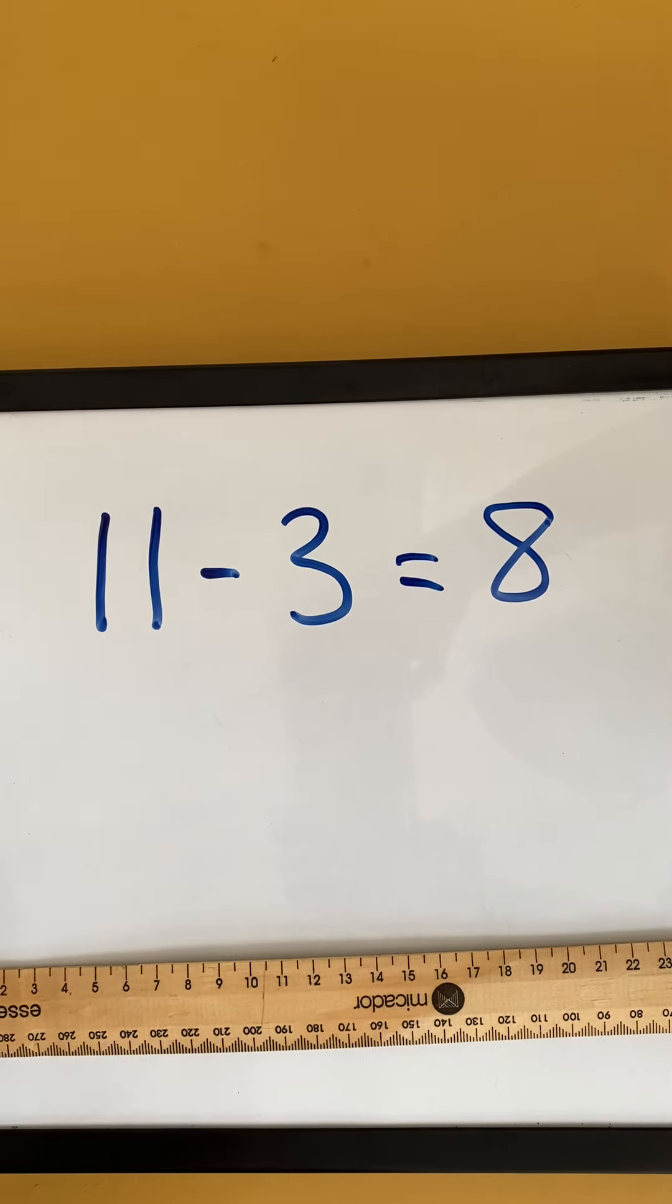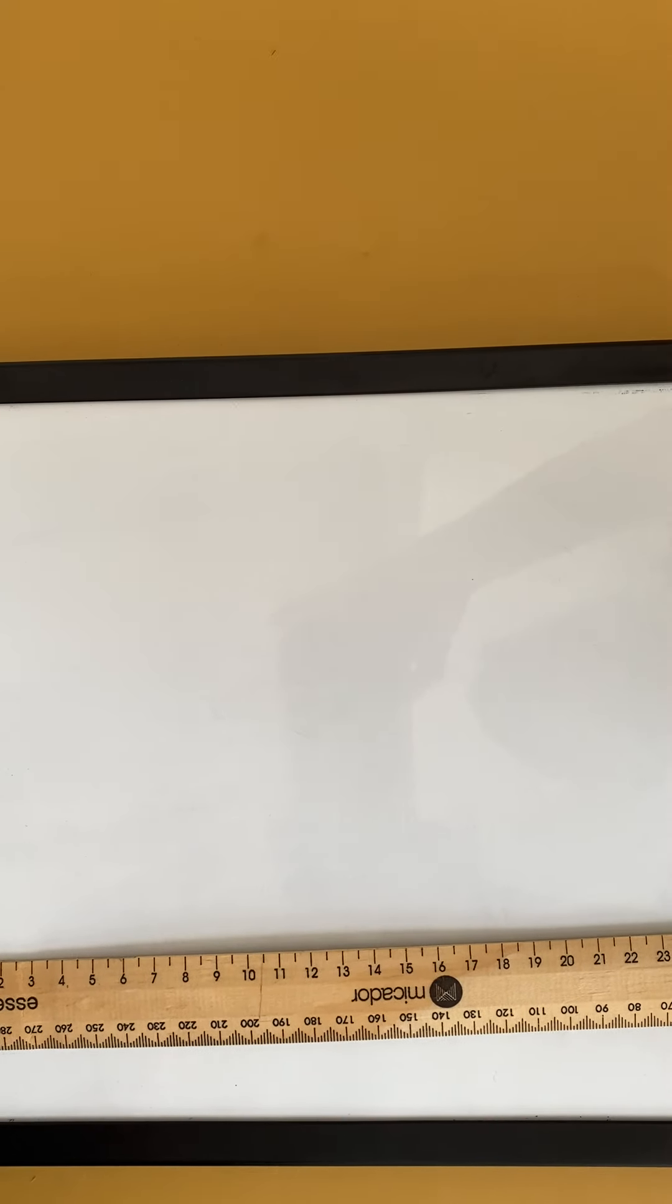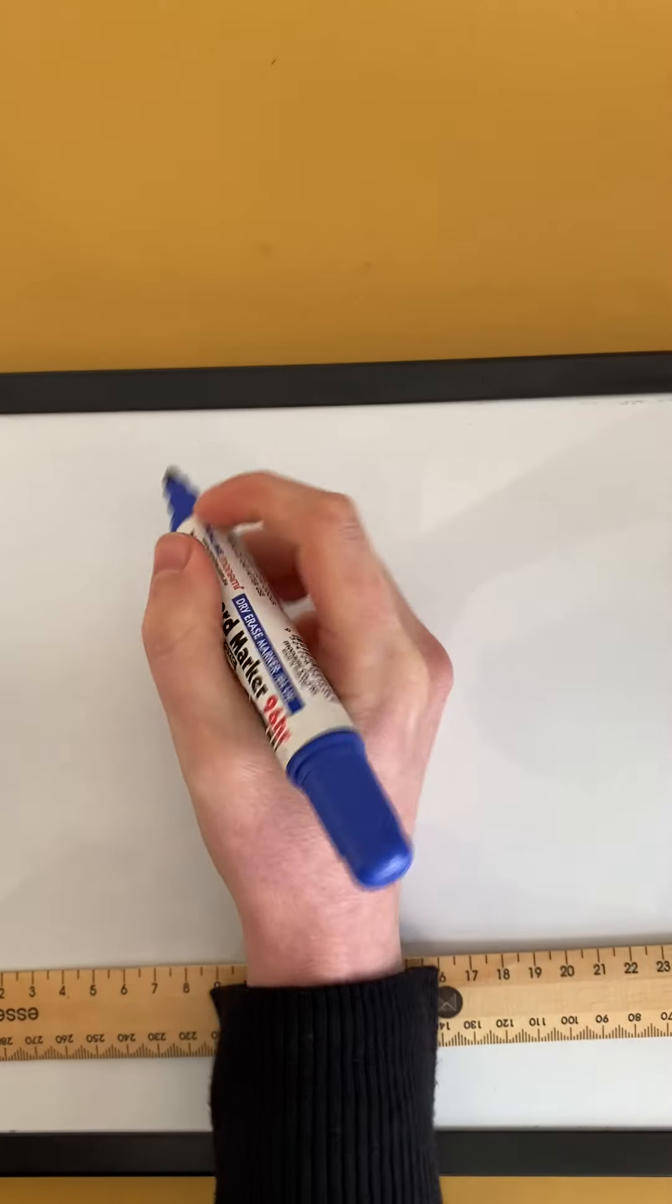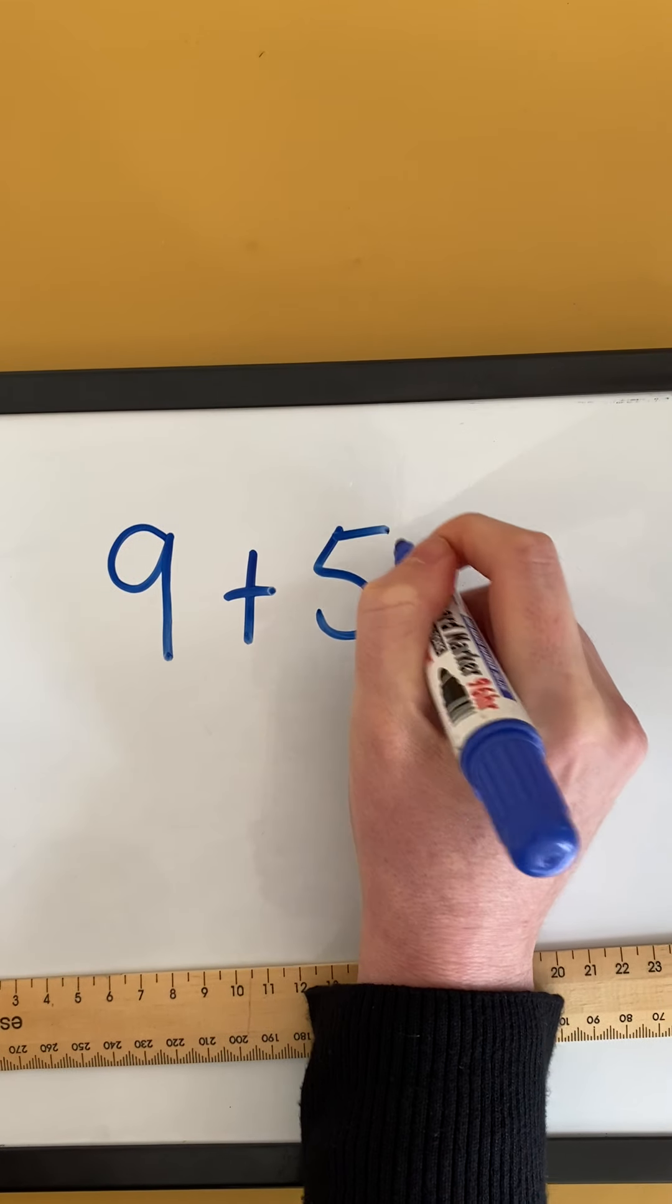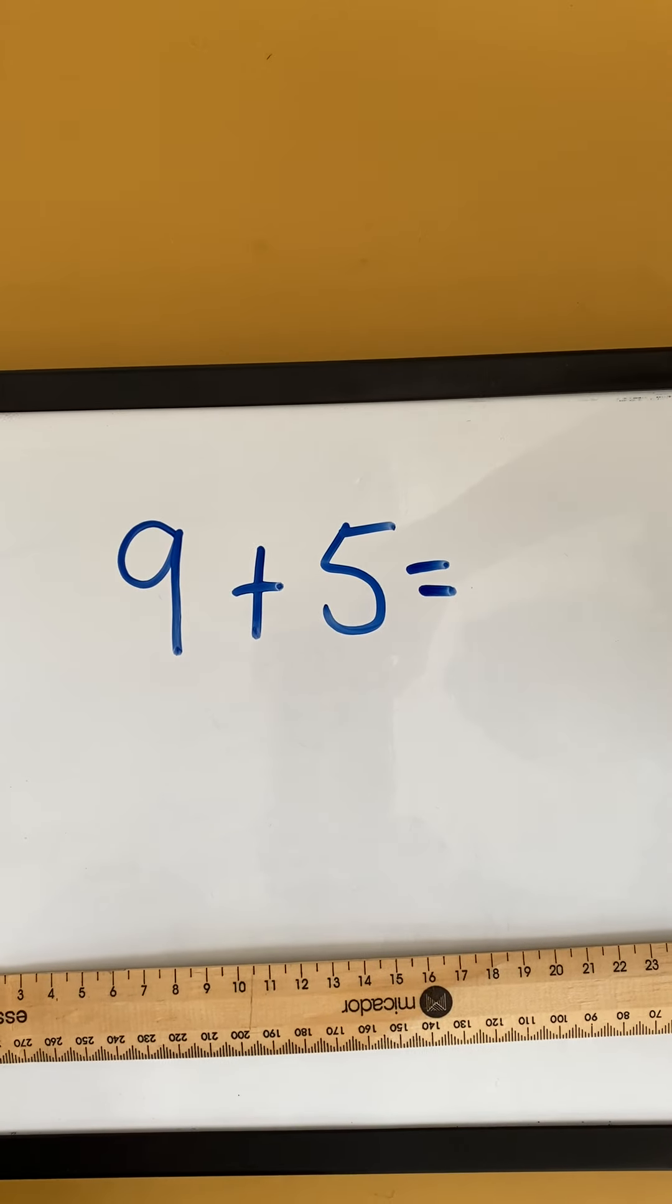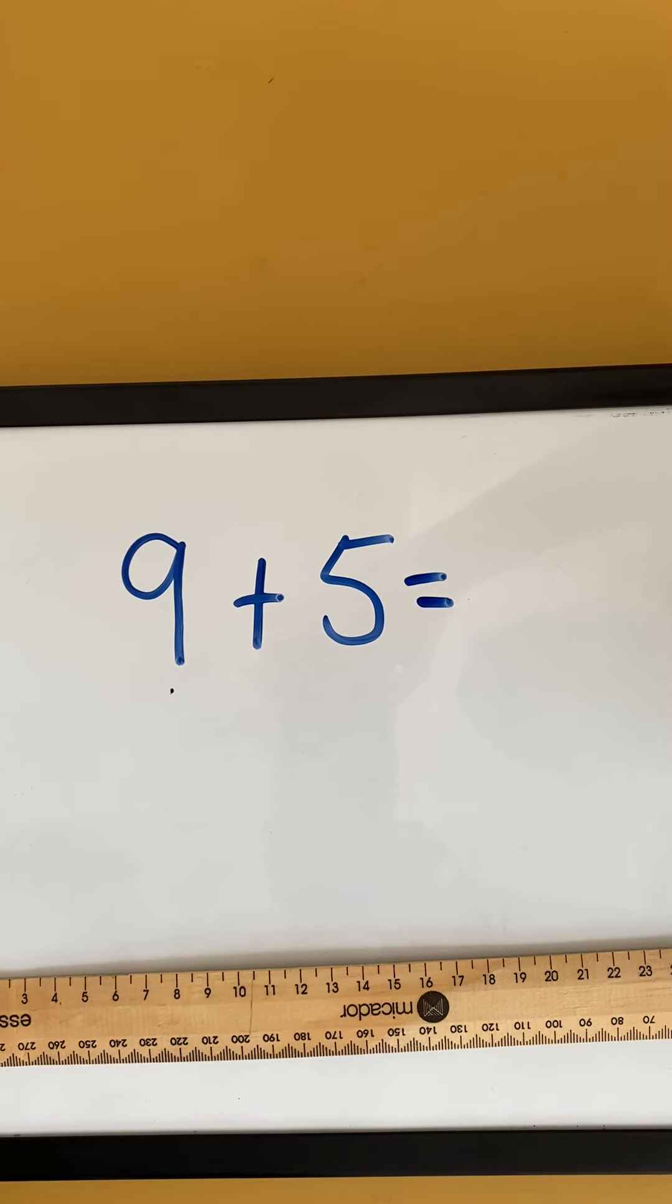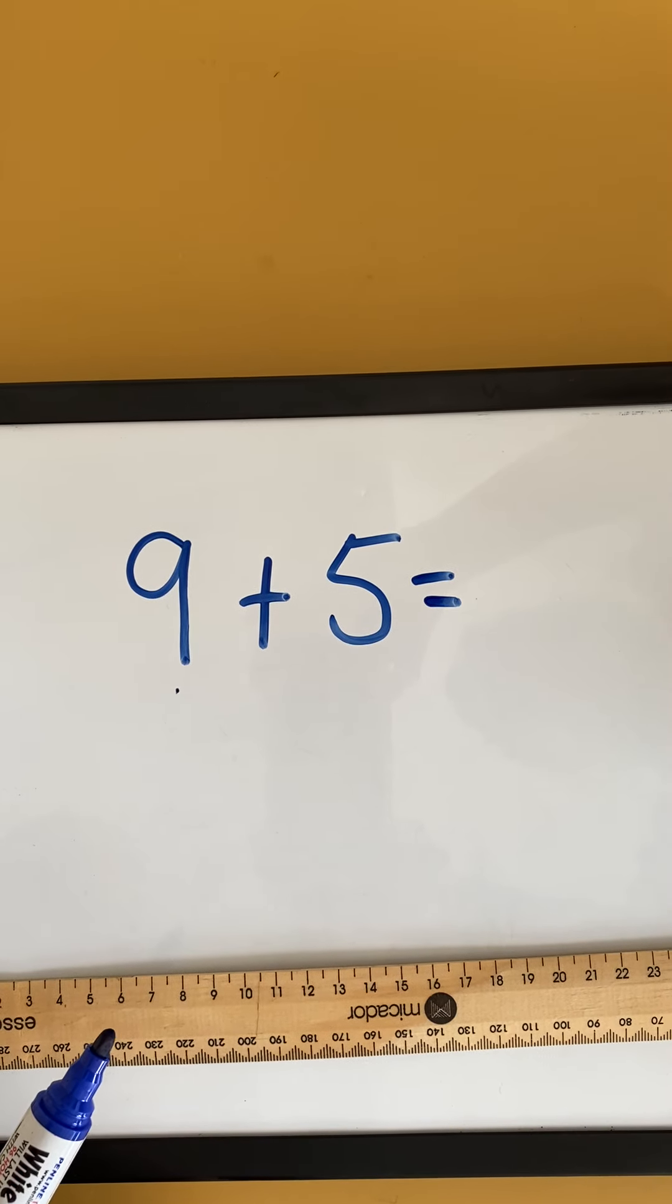I could also use a bridging strategy. This might be new to some of you. Now I would use this strategy when one of the numbers is close to 10. So if I have 9 plus 5, this would be a really good time to use the bridging strategy because I know 9 is very close to 10 and I'm adding a bit bigger number this time, 5.